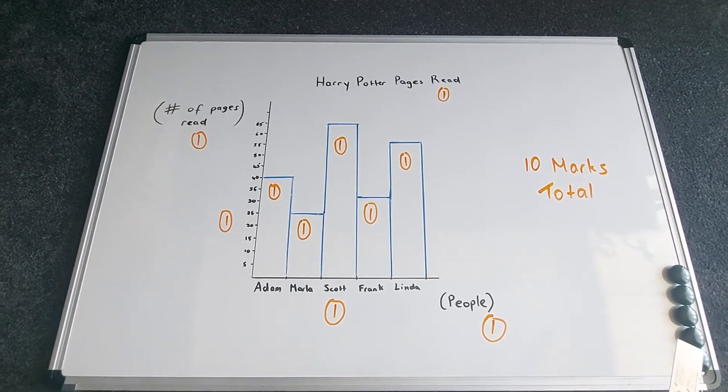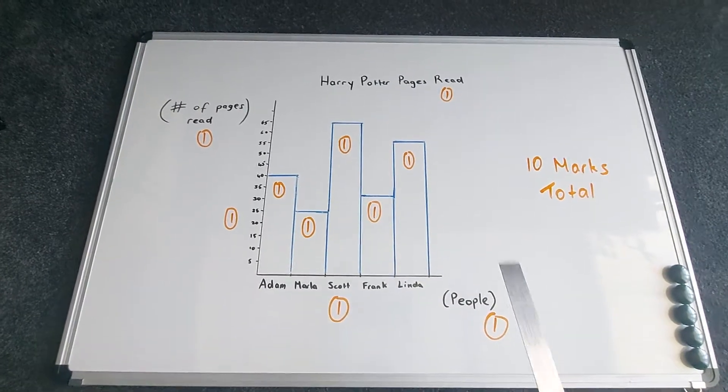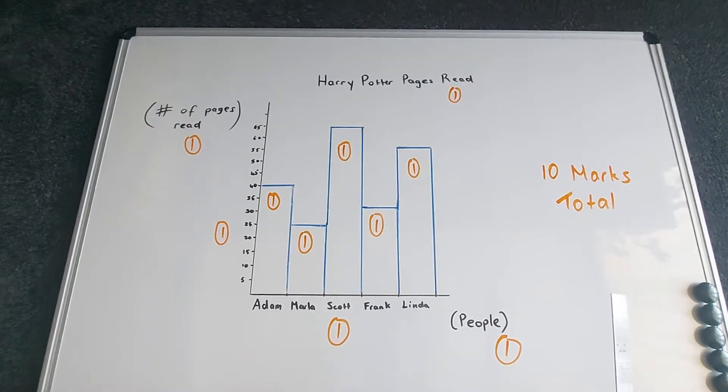Hi everyone, I wanted to go through the answers for your graphing task. The first one that you would have graphed is the one where you're graphing the number of Harry Potter pages that have been read.